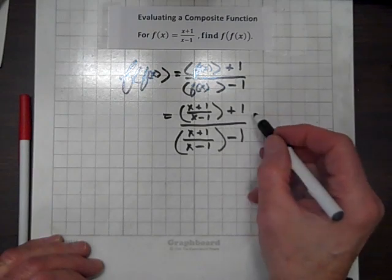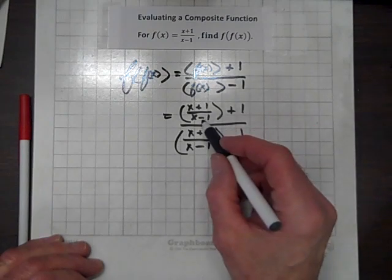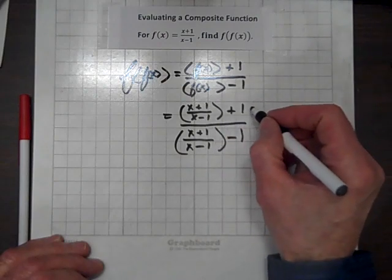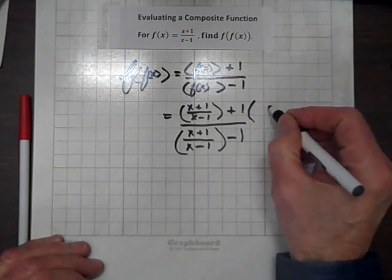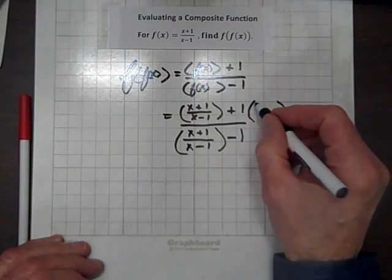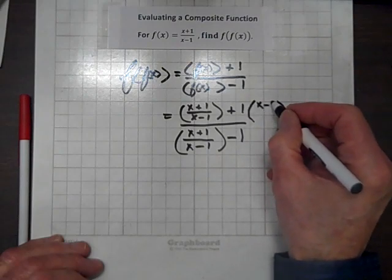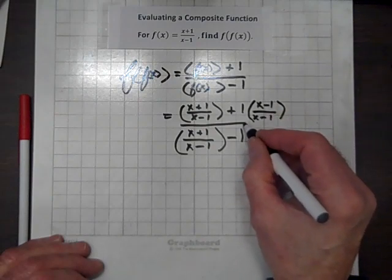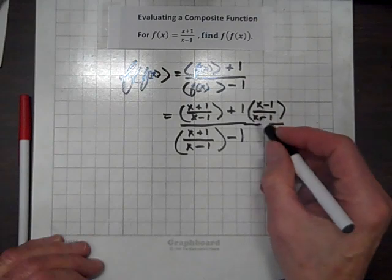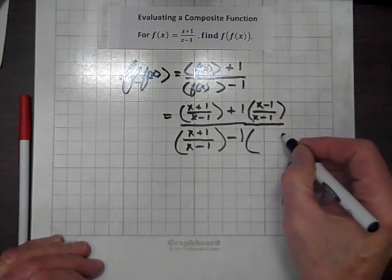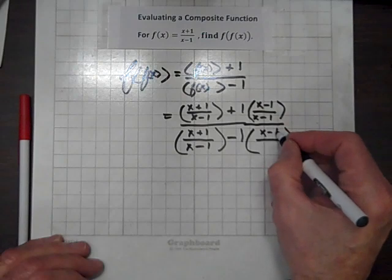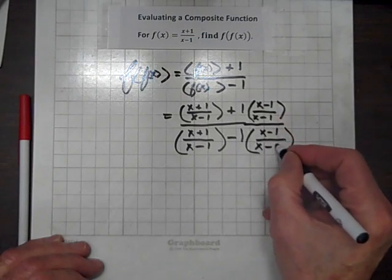We have to add fractions. The common denominator is x minus 1. So we'll multiply this by 1 in the form of x minus 1 over x minus 1. And we'll multiply negative 1 by 1 in the form of x minus 1 over x minus 1.